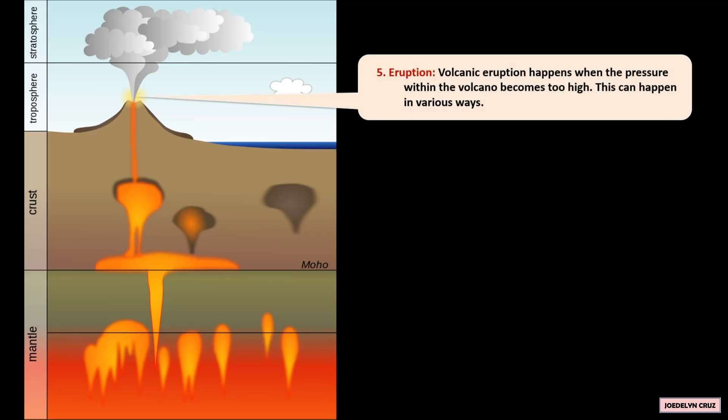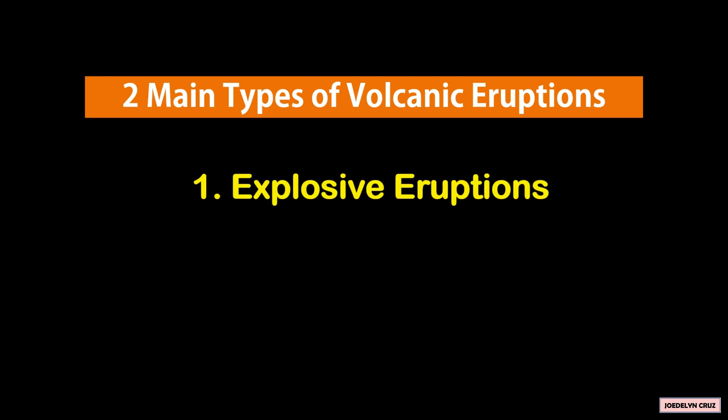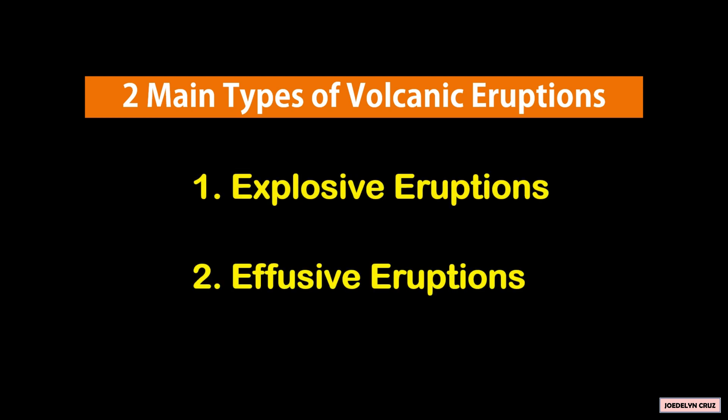Eruption. A volcanic eruption happens when the pressure within the volcano becomes too high. This can happen in various ways. There are two main types of volcanic eruptions: explosive eruptions and effusive eruptions.